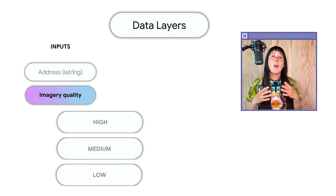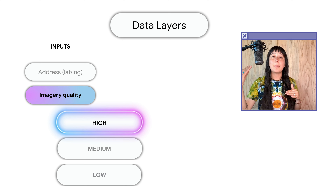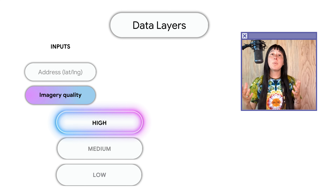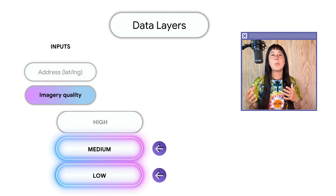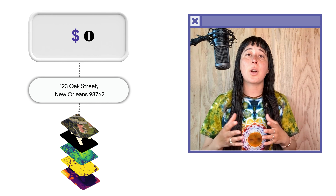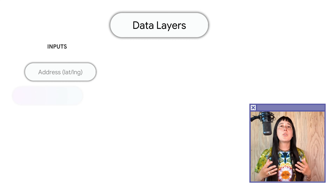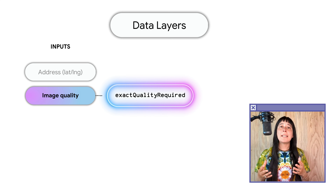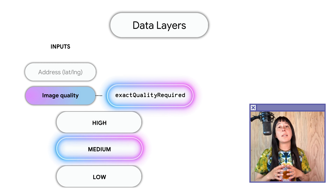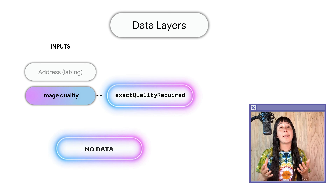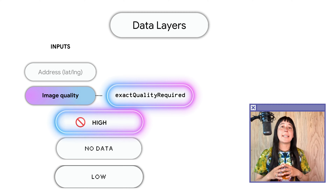The API returns the highest quality available that meets or exceeds the quality you requested. For example, if you request low quality imagery but high quality is available, it returns the high quality imagery. If you request high quality but only low or medium quality is available, you will receive an error message. If the API only has lower quality data than requested and there is no data for that specified building or wider area, users are not charged for making that call. For more granular control, there is also a field called exact quality required — if set to true and the user requests medium quality data, then only medium quality data is returned or nothing, even if high quality data is available for that location.